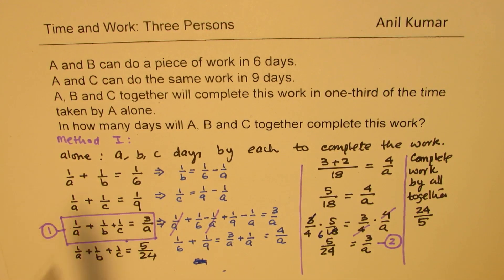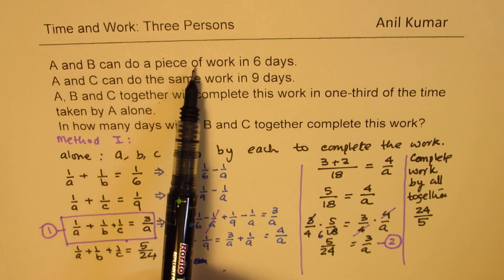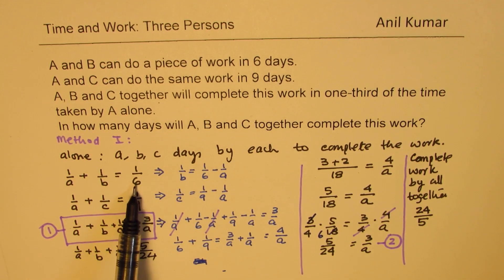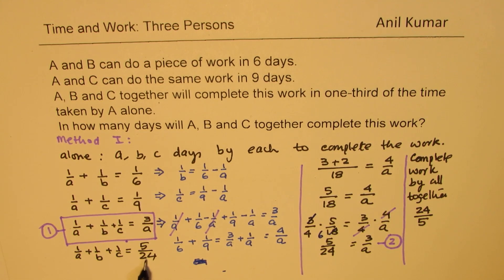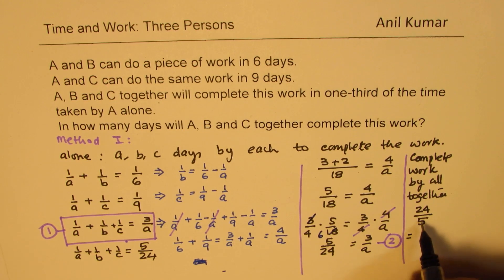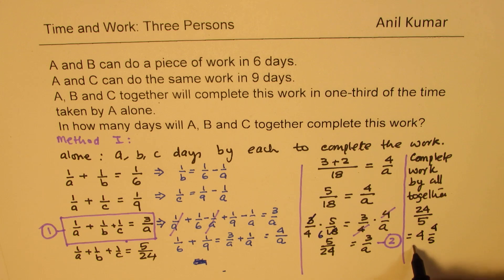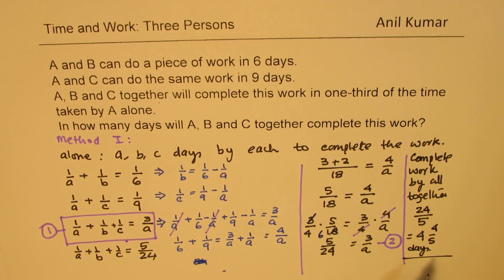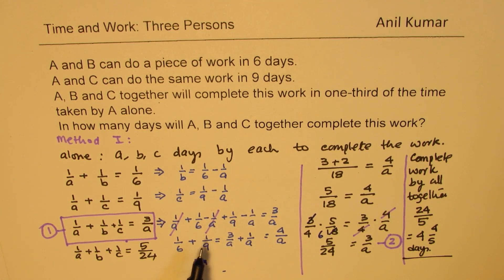So A, B, and C together can complete the work in 24 over five days. That is how you solve it using the standard method. And now we are going to use the efficiency method to solve the same question once again.